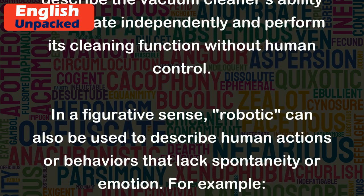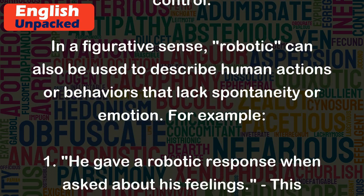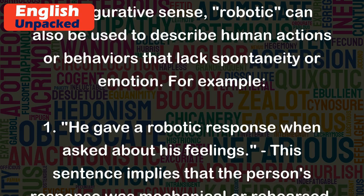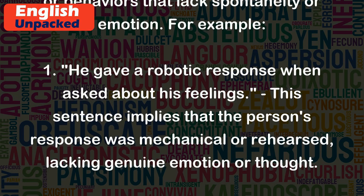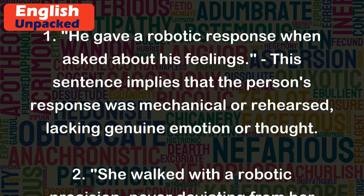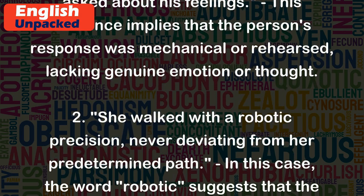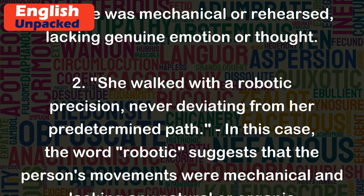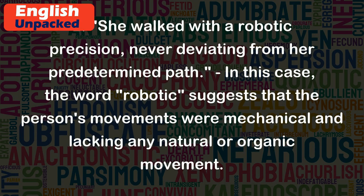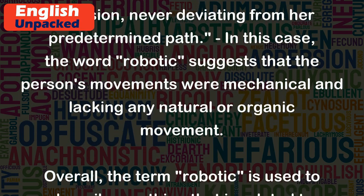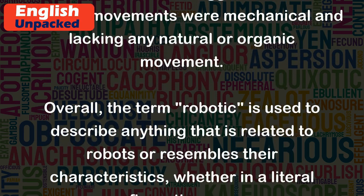In a figurative sense, 'robotic' can also be used to describe human actions or behaviors that lack spontaneity or emotion. For example: 1. He gave a robotic response when asked about his feelings. This sentence implies that the person's response was mechanical or rehearsed, lacking genuine emotion or thought. 2. She walked with a robotic precision, never deviating from her predetermined path. In this case, the word 'robotic' suggests that the person's movements were mechanical and lacking any natural or organic movement.